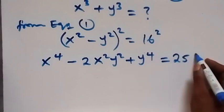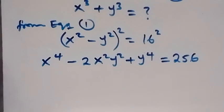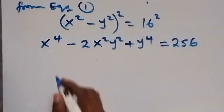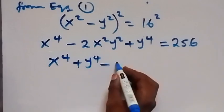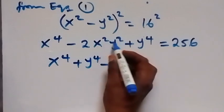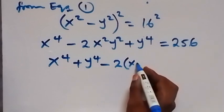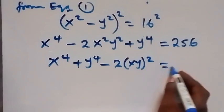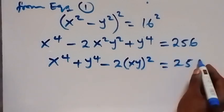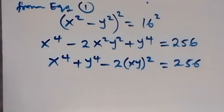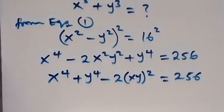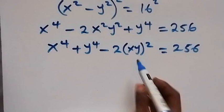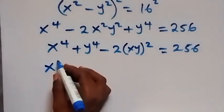This equals 16 squared which gives us 256. Bringing the power-of-4 terms together, we have x to the power of 4 plus y to the power of 4, then minus 2 times (xy) squared equals 256. From equation 2, xy equals 15, so we replace xy with 15.